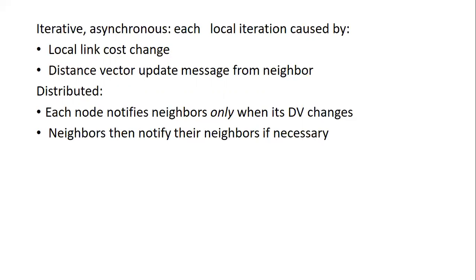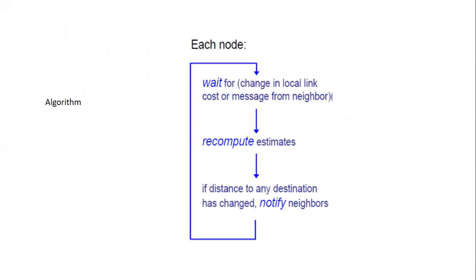The algorithm is distributed: each node notifies neighbors only when its distance vector changes, and neighbors then notify their own neighbors if necessary. Each node waits for a change in local link cost or a message from any neighbor. Once received, it recomputes its estimates, and if the distance to any destination has changed, it notifies neighbors again.